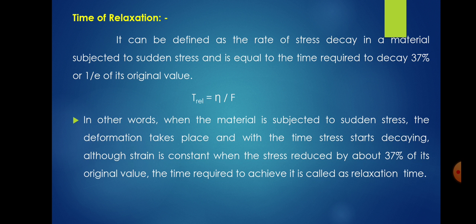The relaxation time can be defined as the rate of stress decay in a material subjected to sudden stress, and is equal to the time required for stress to decay to 37 percent, or 1/e, of its original value. The relaxation time is given by the equation: t_relaxation = eta / E. In other words, when the material is subjected to sudden stress, deformation takes place and with time the stress starts decaying although strain is constant. The time required for stress to reduce by about 37 percent of its original value is called the relaxation time.